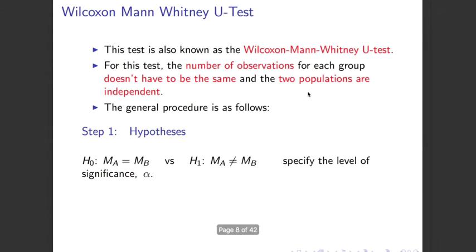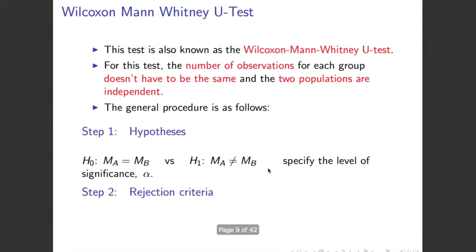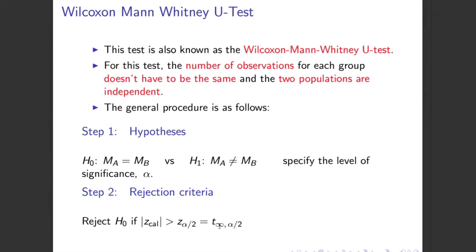We follow the same general procedure: we state the hypothesis. Because we have two populations, under H0 the median of group A equals the median of group B, and under the alternative they are not equal. We set the level of significance alpha. The rejection criterion for this two-sided test is: reject H0 if the absolute value of the test statistic is greater than Z(alpha/2), which can also be looked up in the t-table with degrees of freedom infinity.